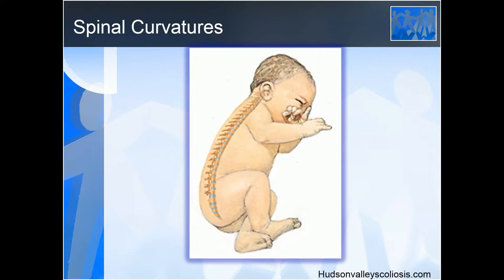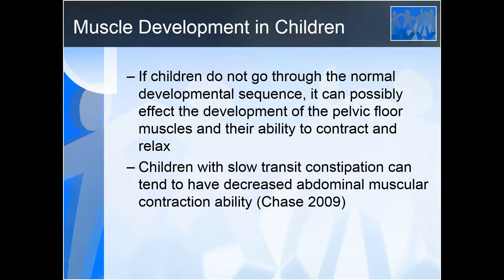In the infant, the cervical and lumbar curves have not yet developed. The relationship of the thorax, diaphragm, and pelvic floor is completely different than in an adult because they don't yet have those correct spinal curvatures. If children do not go through the normal developmental sequence, it can possibly affect the development of the pelvic floor and their ability to contract and relax those muscles. For instance, children with slow transit constipation can tend to have decreased abdominal muscle contraction ability.